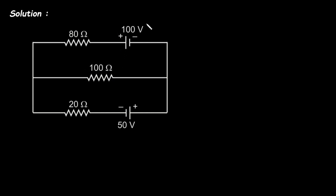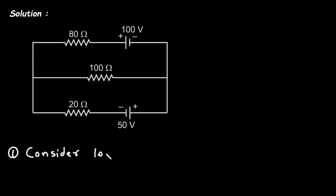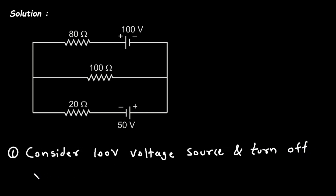First, we will consider the 100 volt voltage source and turn off all other sources. Remember that when we turn off a voltage source, we replace it with a short circuit. When we turn off a current source, we replace it with an open circuit. So step one is to consider the 100 volt voltage source and turn off all other sources.